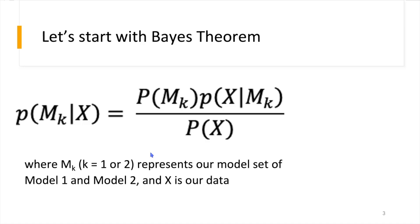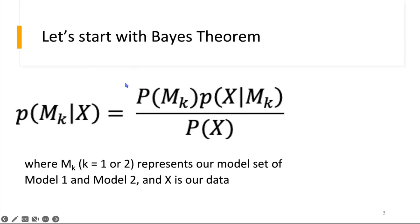To get started, let's begin with Bayes theorem. On the left-hand side of the equation, we have our posterior, which is equivalent to the probability of our model given the observed data. The subscript K denotes the model set where we have model one and model two. The probability of model one given the data is equivalent to the prior probability of model one, multiplied by the likelihood — the probability of observing the data given model one — divided by the probability of the data.